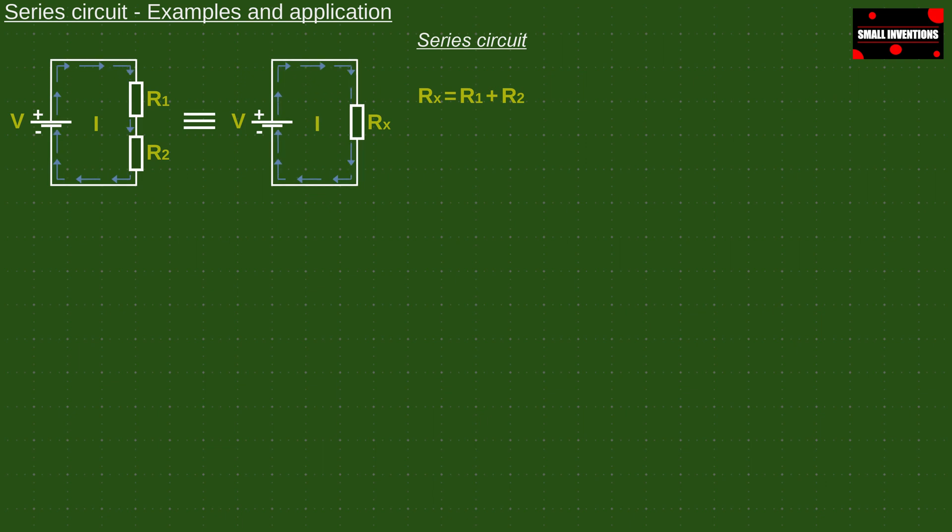In case there are several resistors in series, we just simply add them up and get the total resistance of the series circuit, as shown by the official equation.